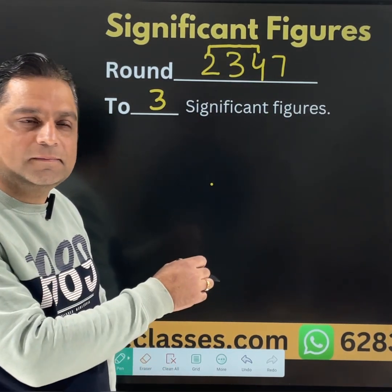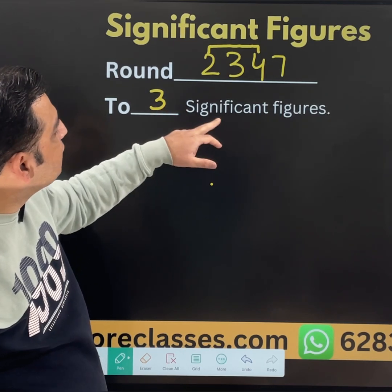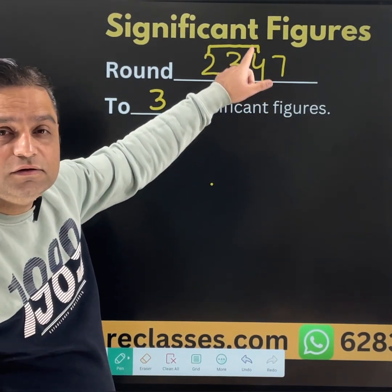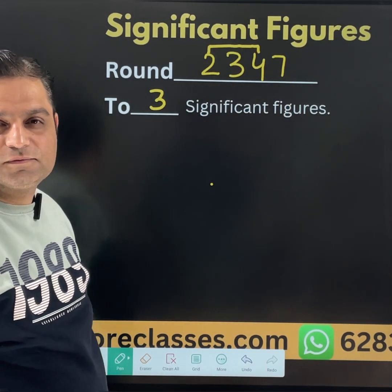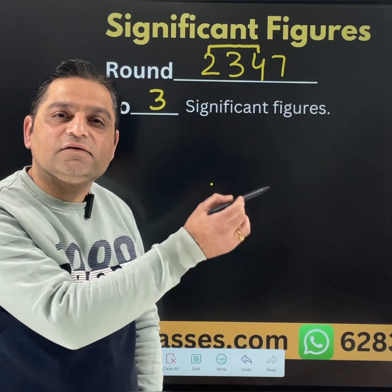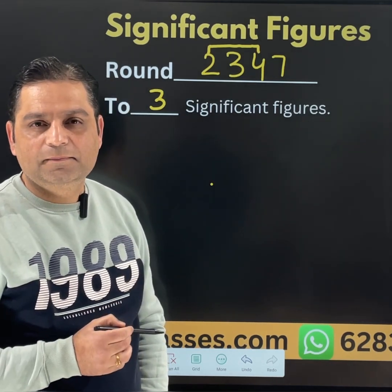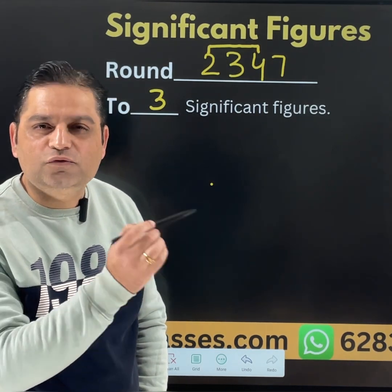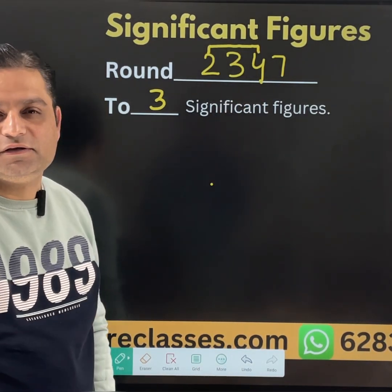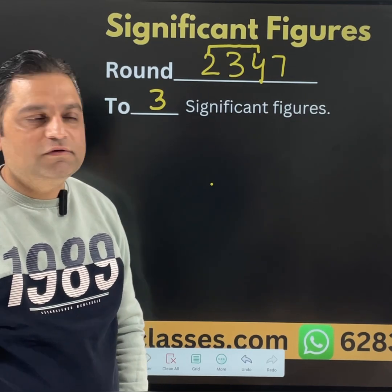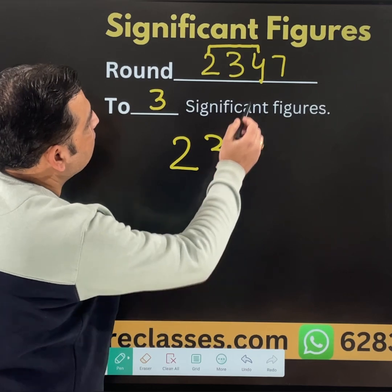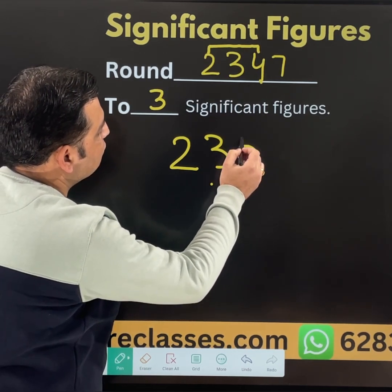3 significant figures — your focus is on the first 3 numbers, but you need to check the fourth number also. If the fourth number, the next number, is greater than or equal to 5, then this 4 needs to be changed. We will write it as 2, 3 — and 4 will be changed to 5.